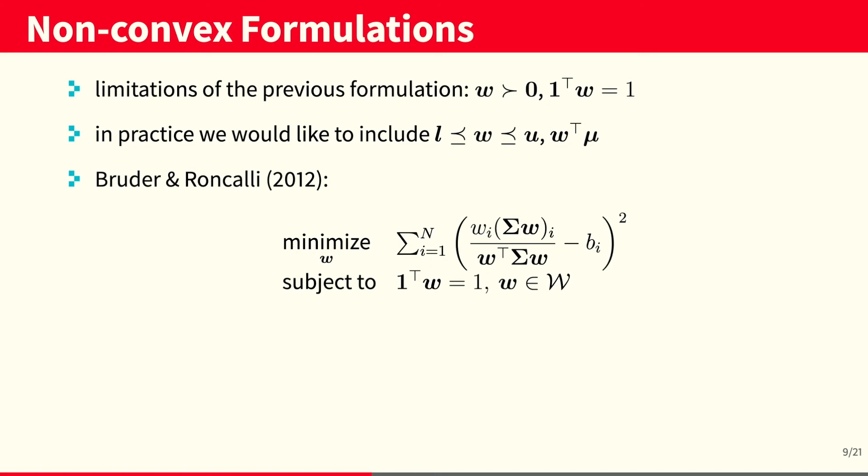In 2012, Brodie and Roncalli proposed to solve the risk parity problem as the following non-convex problem. Then, how do we solve this non-convex formulation? Well, at first we could try using general-purpose solvers, but it turns out general-purpose solvers are often slow.